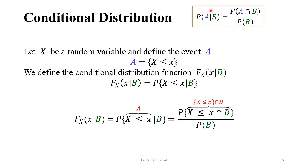We can now use the conditional formula and write the CDF as a probability, and probability can be written as the probability of an intersection divided by the probability of the condition. So this is how we define conditional distribution, because distribution or CDF is directly related to the probability.